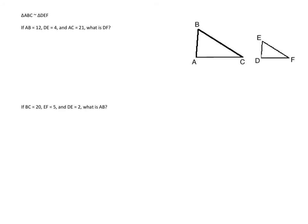So let's look at another example, here BC is 20, so there's 20, EF is 5, DE is 2, and we're trying to find AB. So it might be easier to go this way.